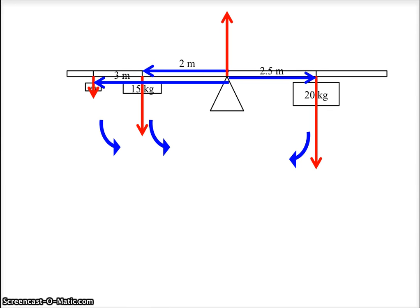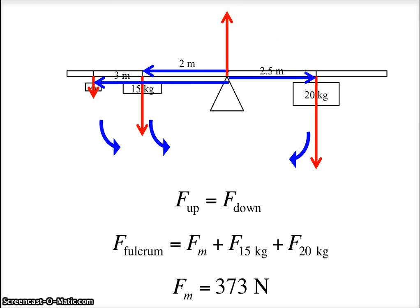In addition to balancing torques, we could also balance up and down forces. The forces that point down, there's this 6.67 kilogram mass pulls down with its weight, the 15 kilograms pulls down with its weight, and the 20 pulls down with its weight. So if we add those three forces together, we have to get the total up force, which is just the force of the fulcrum. Nothing else pushes up on the beam. So from that process, you can calculate the force of the fulcrum, which is roughly 373.